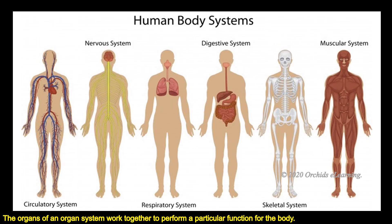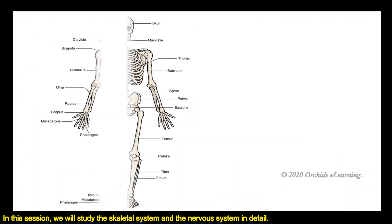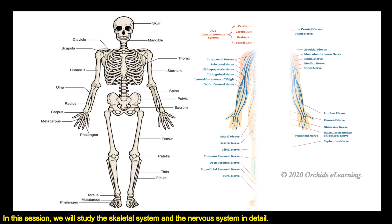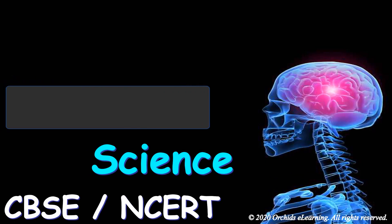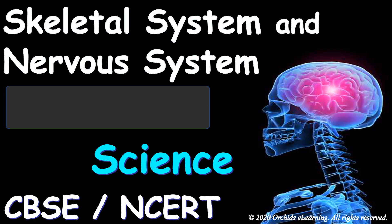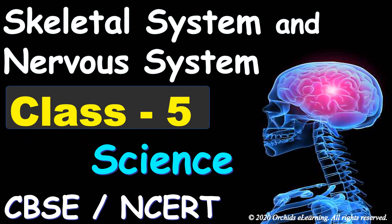The organs of an organ system work together to perform a particular function for the body. In this session we will study the skeletal system and the nervous system in detail.